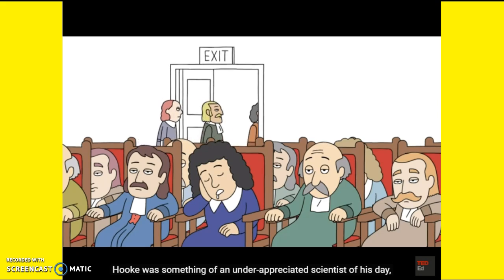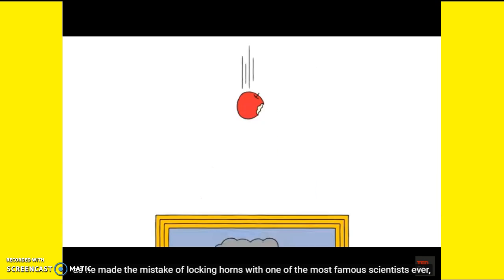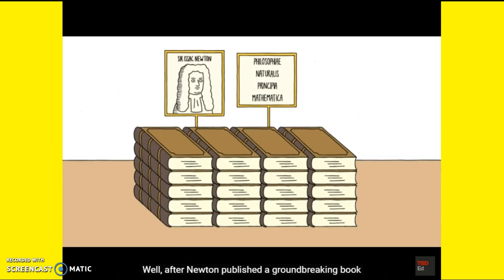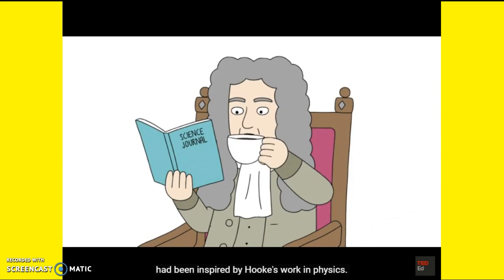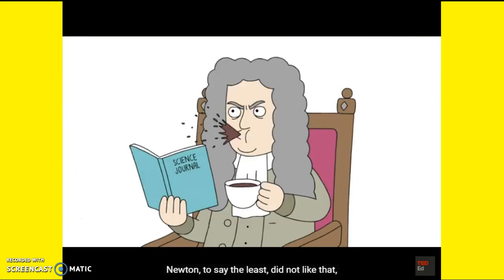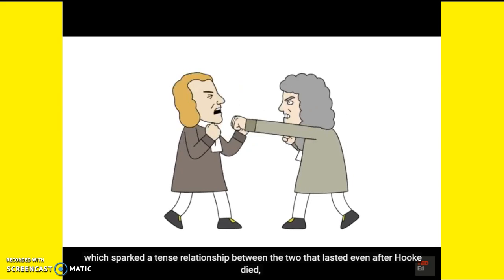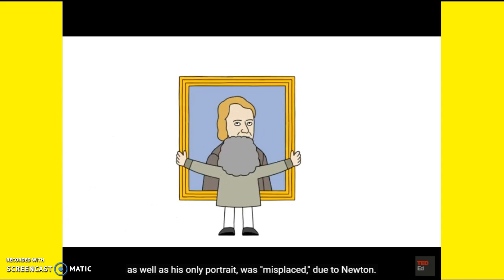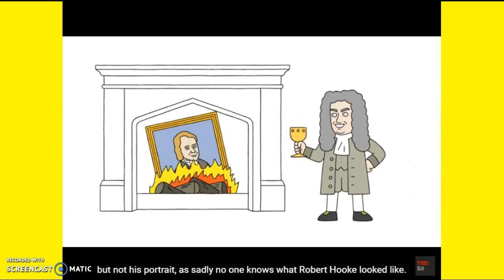Hooke was something of an underappreciated scientist of his day — something he brought upon himself as he made the mistake of locking horns with one of the most famous scientists ever, Sir Isaac Newton. After Newton published a groundbreaking book on how planets move due to gravity, Hooke claimed that Newton had been inspired by Hooke's work in physics. Newton did not like that, which sparked a tense relationship between the two that lasted even after Hooke died. Quite a bit of Hooke's research, as well as his only portrait, was displaced due to Newton. Much of it was rediscovered after Newton's time, but not his portrait — sadly, no one knows what Robert Hooke looked like.